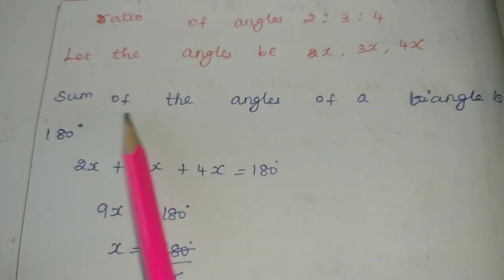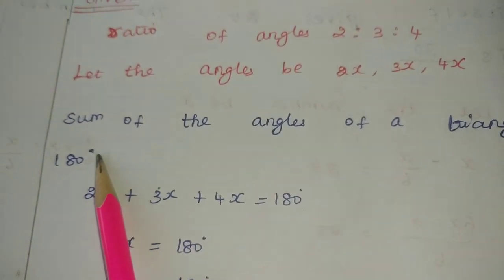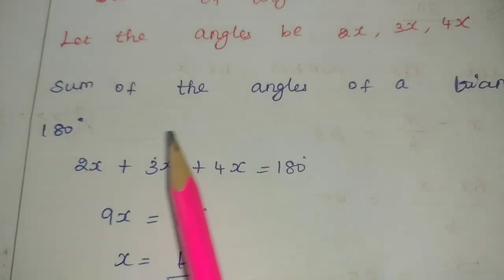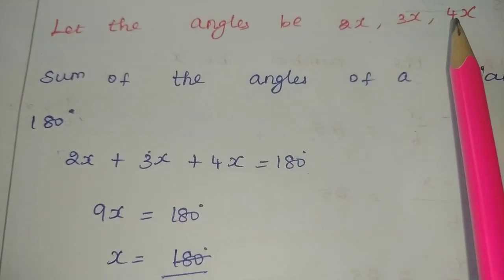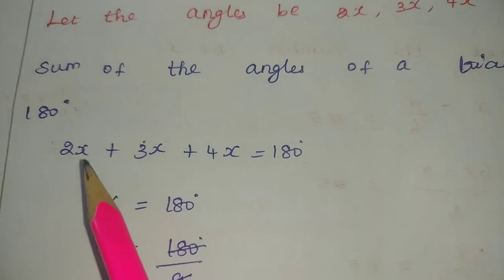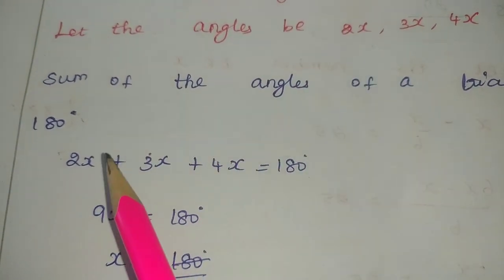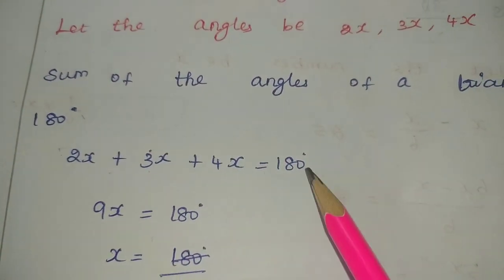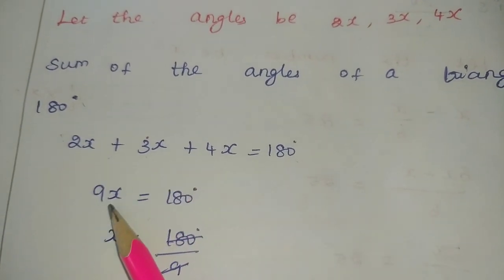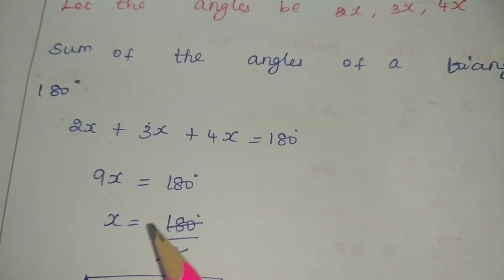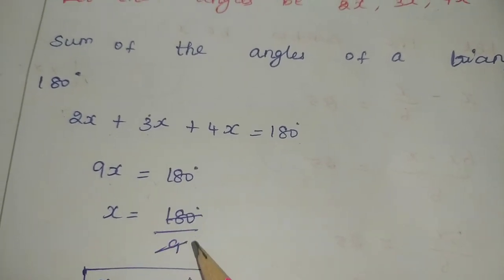Next, the sum of the angles of a triangle is 180 degrees. So 2x plus 3x plus 4x equals 180. This gives 9x equals 180. Therefore, x is equal to 180 by 9, which equals 20. So x value is 20.